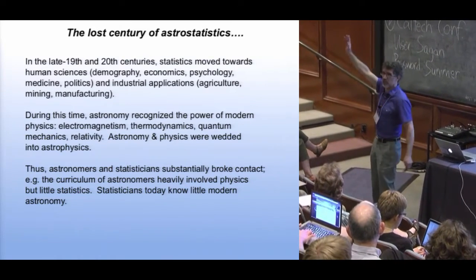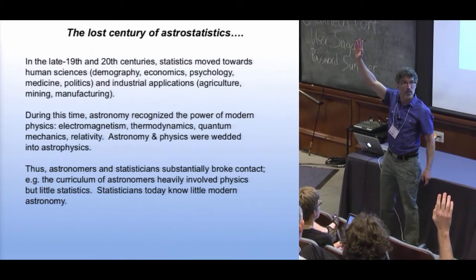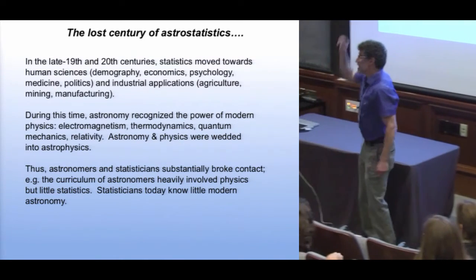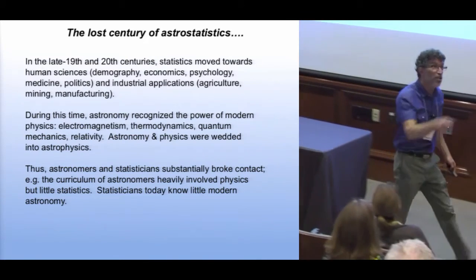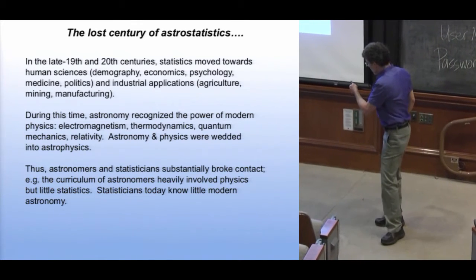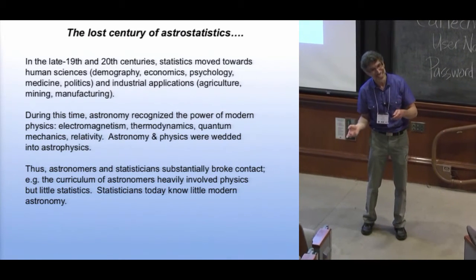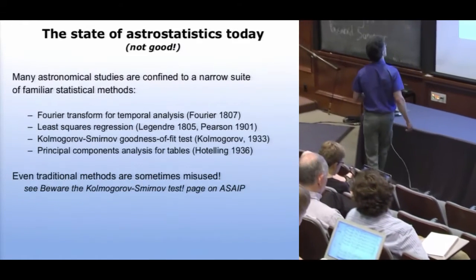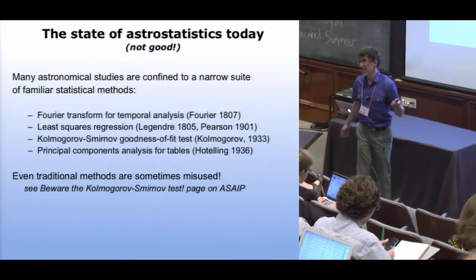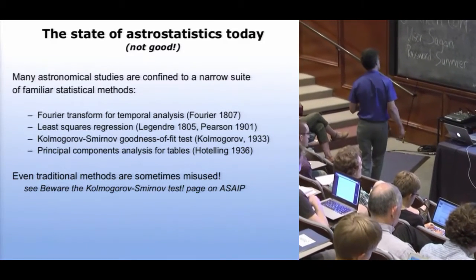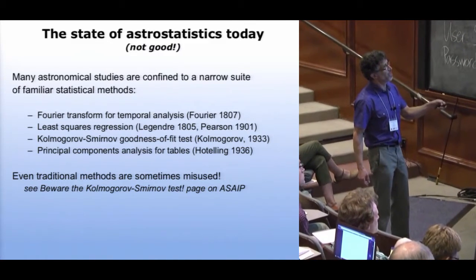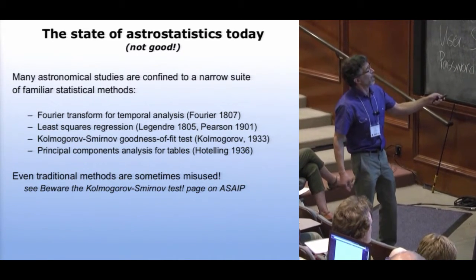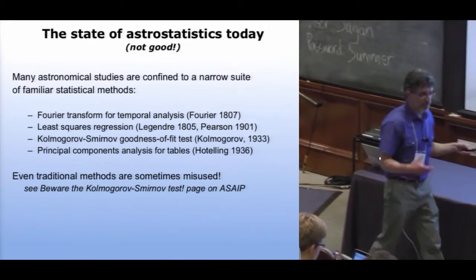I was trained with zero classes in statistics. How many classes in statistics have you taken? Just a small number — and you're self-selected to be here, a biased sample. So the net result is that by the late 20th century, astronomers didn't know modern statistics, which had blossomed since World War II, and statisticians didn't know a star from a galaxy, a quasar from a pulsar. There are many studies in astronomy that use decades- or centuries-old methods like Fourier transforms for temporal analysis. And even then, they're misused — our most-visited page on our web portal ASAIP is 'Beware the Kolmogorov-Smirnov test,' which says it's being misused all the time and you should use the Anderson-Darling test instead.